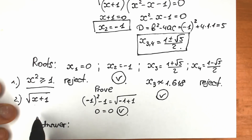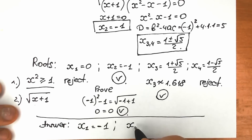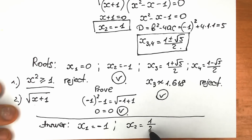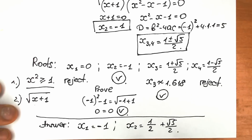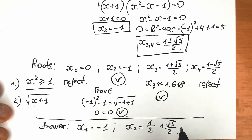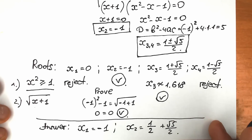So our final answer has only two roots: x = -1 and x = 1/2 + √5/2. I hope you understood my explanation and learned something new. Don't feel bad if you got this wrong. If you have questions or suggestions, write them in the comment section. Thank you for your time — see you in the next video!